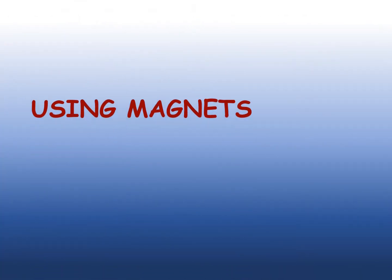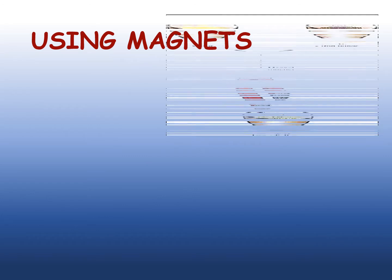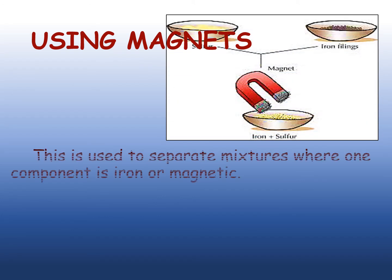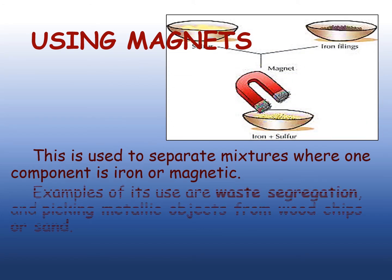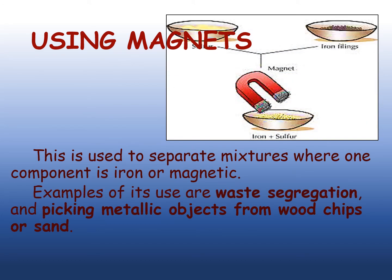The last technique that we are going to discuss is by using magnets. In this technique, we need to separate mixtures where one component is made up of iron or is magnetic. Examples of its use are in waste segregation and in picking metallic objects from wood chips or sand.